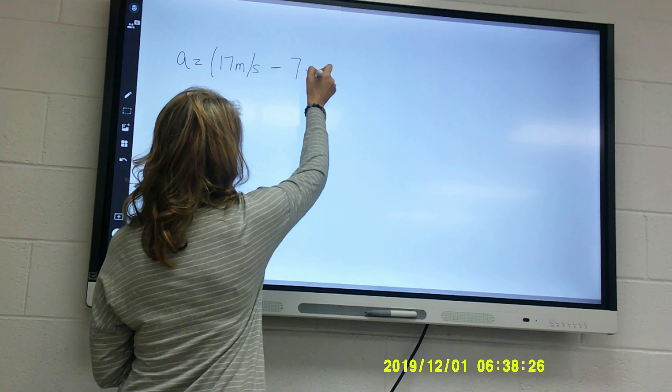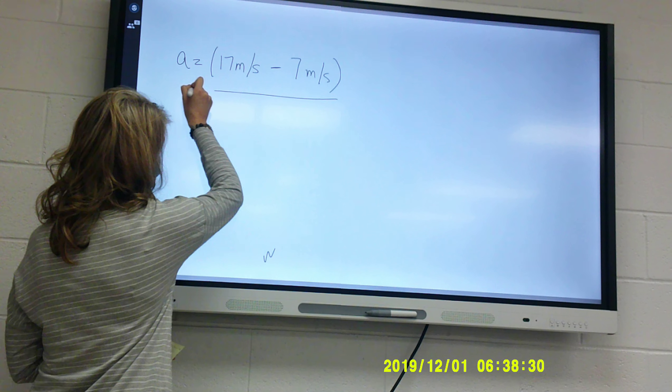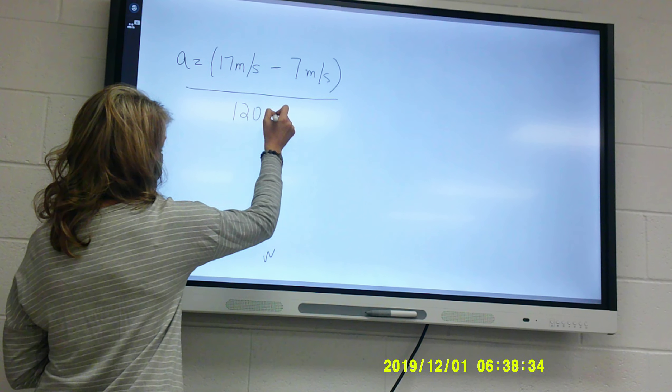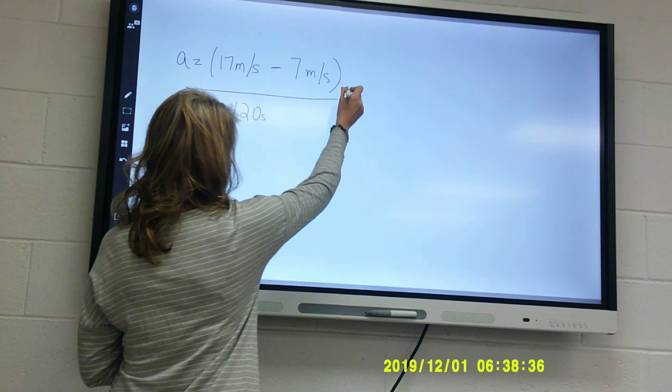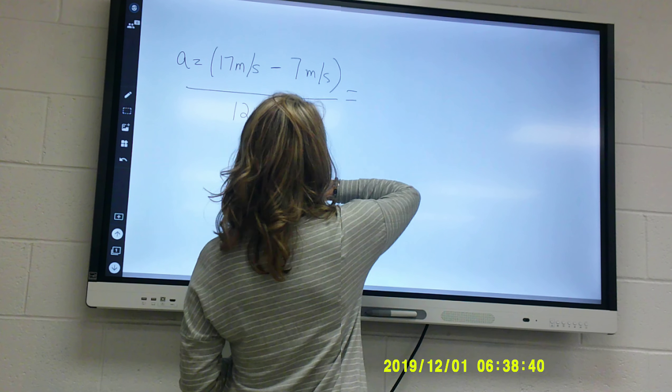Meters per second minus, what was my initial speed? 7 meters per second. 7 meters per second. And then I'm going to divide that by what? 120. 120, what's my unit? Seconds. Seconds.